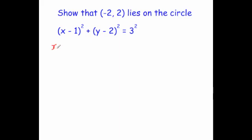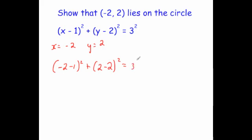We have x equal to minus 2, and y equal to 2. Substituting those in: x is minus 2, minus the 1, all squared, plus y — well y is equal to 2, so 2 minus 2 — all squared, equals 3 squared. Minus 2 take away 1 is minus 3, all squared, plus 2 take away 2 is 0, so 0 squared, equals 3 squared.